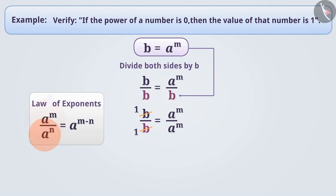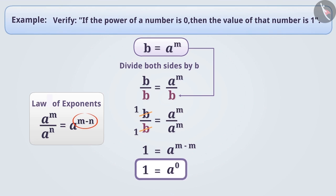Under this law, if the base of the division is the same, we subtract the power of the divisor from the power of the dividend and write the result as the power of the base. So here, we write the power of a as m minus m, which equals 0. That is, a to the power of 0 equals 1. This verifies that if a number has a power of 0, its value will be 1.